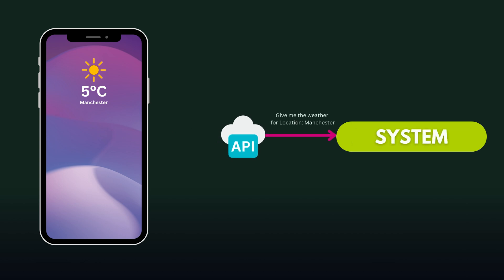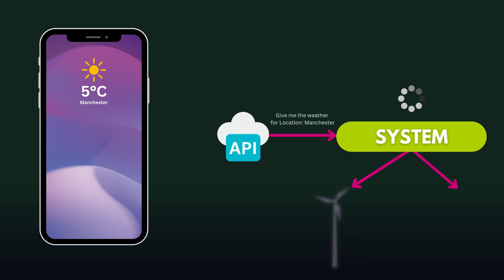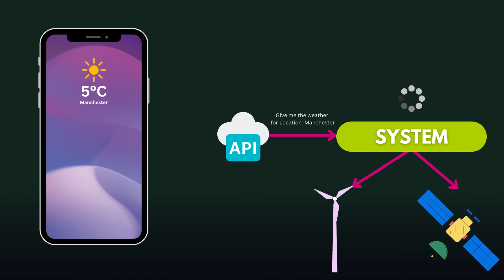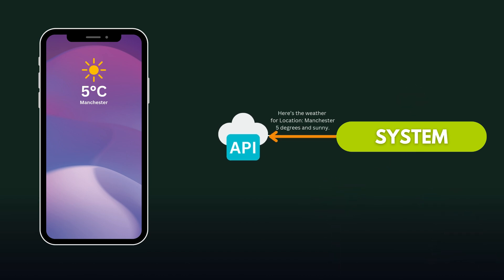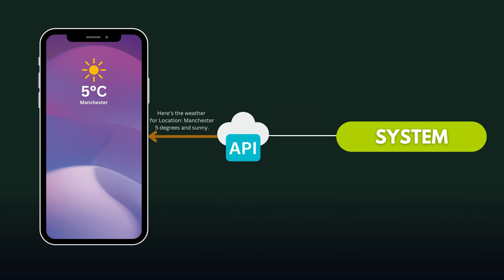The system then processes that response, probably having access to weather stations and maybe satellites, and then it passes it back to the API, which brings it to the app and then it's displayed as a temperature.